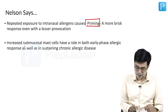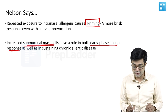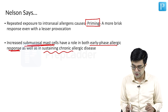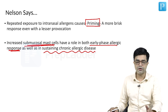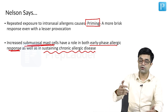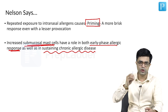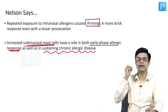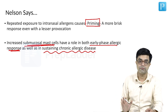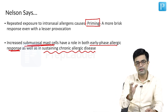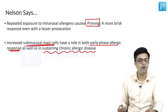Increased submucosal mast cells have a role in both the early phase allergic response as well as in sustaining the chronic allergic disease. Chronic allergic disease is produced because low-grade inflammation is sustained by these submucosal mast cells, which are long-lasting, coated with IgE antibody, and always in a ready state to produce the early reaction. Their number in children with allergic rhinitis is always elevated compared to normal children.